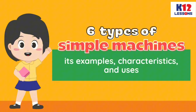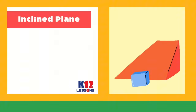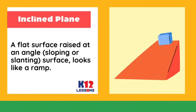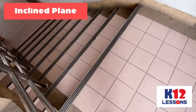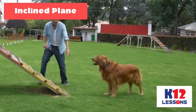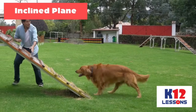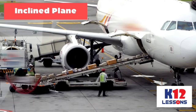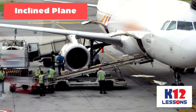The six types of simple machines — their examples, characteristics, and uses. Inclined plane: a flat surface raised at an angle, a sloping or slanting surface that looks like a ramp. Examples: stairs, slide, and wood ramp. Uses: to lift or raise a heavy object by moving it up a slope.